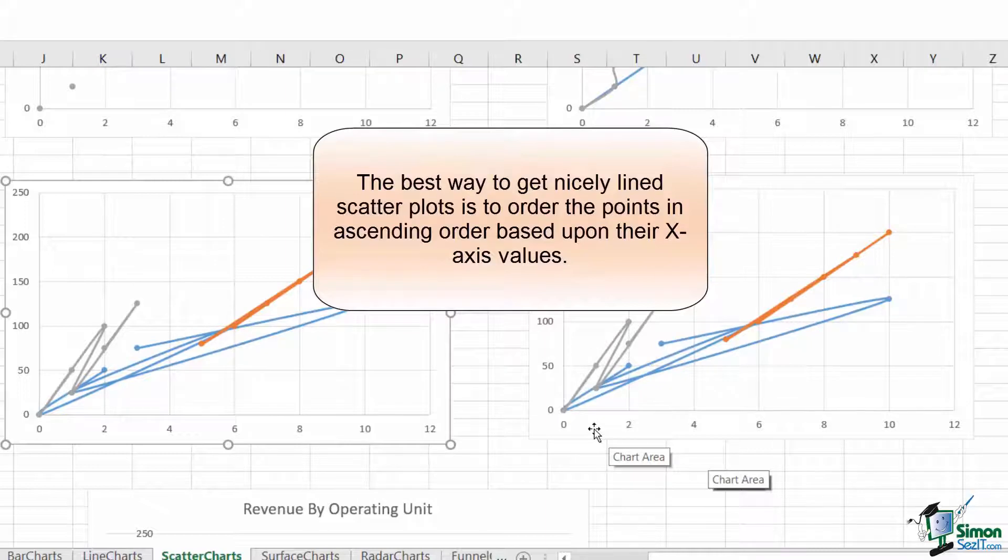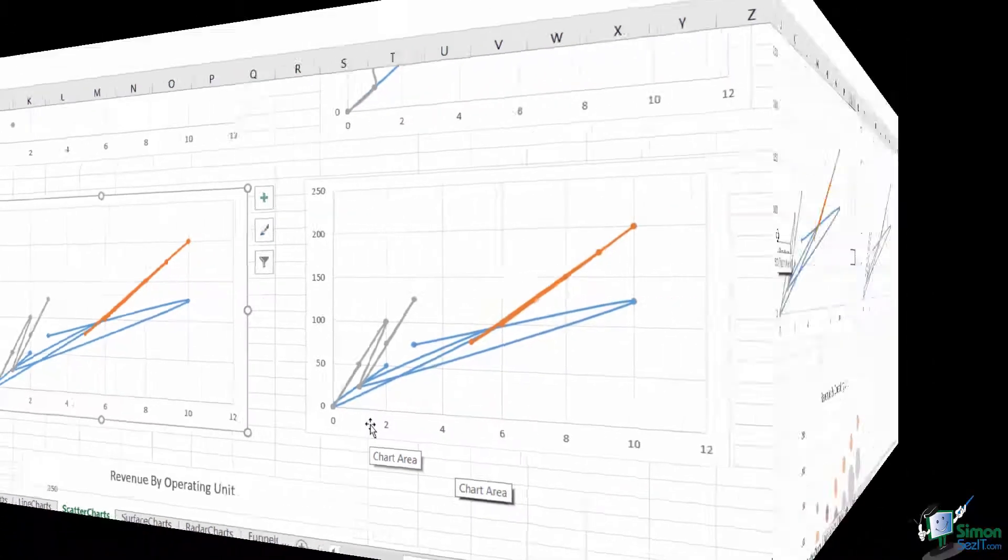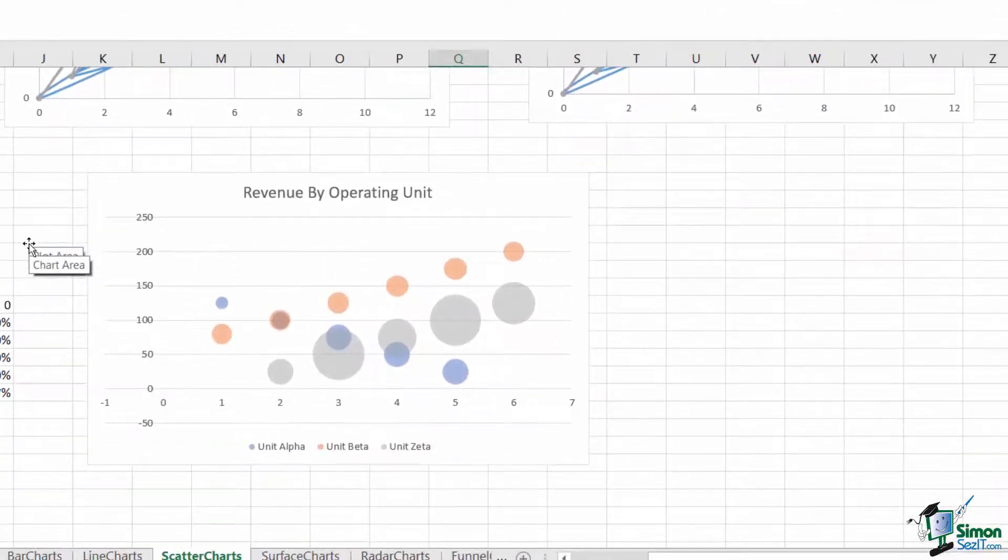I use scatter plots quite frequently for looking at variance analysis and residual plots, very statistical pieces of information. Otherwise, I also find them useful for mixing and matching data across different x-axis, as we've done with the employees here, so long as it's done carefully.